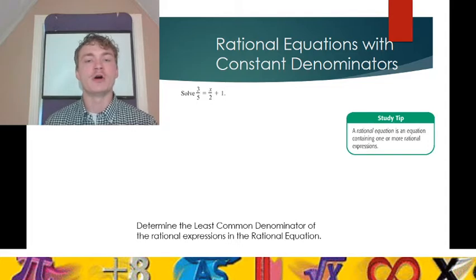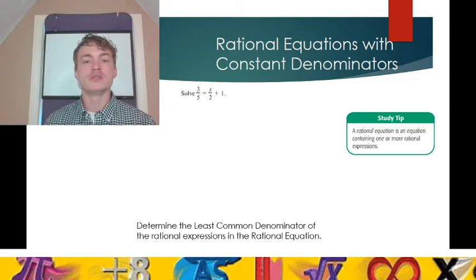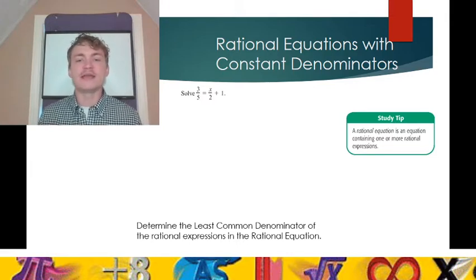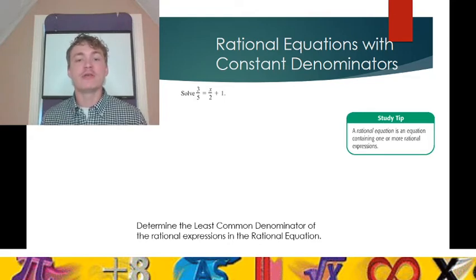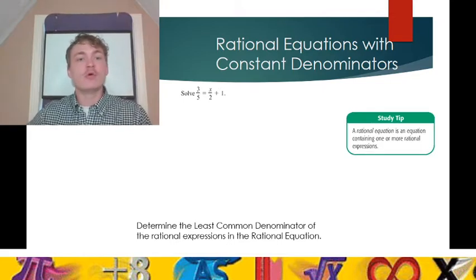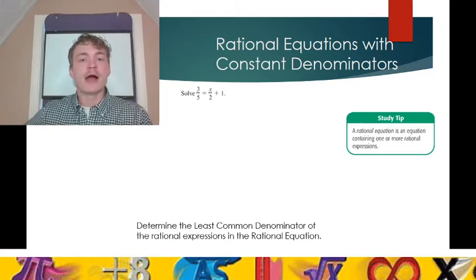For example, solve the rational equation 3/5 equals x over 2 plus 1. We do have a rational equation — we notice there is an equality sign. When you take x and divide it by 2 and add 1 to that result, this equals the fraction 3/5. What number could that be? We could try guessing what x could be, but x could potentially be a fraction, a decimal, or an irrational number.